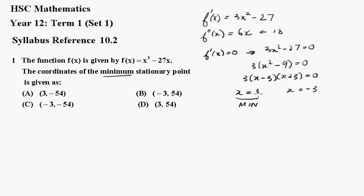Working out what the value of y is, or going back into the function here, we'll see that f(3) = 27 - 27 × 3, which will give me -54.